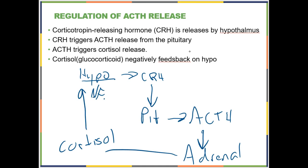On the exam you can't draw diagrams; you have to use sentences. The hypothalamus releases corticotropin-releasing hormone, which travels to the pituitary, causing the release of adrenocorticotropic hormone. ACTH goes everywhere, but when it hits the adrenal cortex, those cells release cortisol. Cortisol goes everywhere and does many things, but when it hits the hypothalamus, it causes a decrease in CRH — it negatively feeds back — so cortisol levels don't keep going up.